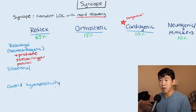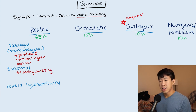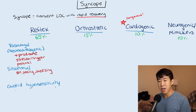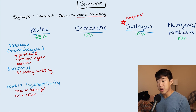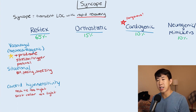Situational syncope is basically vasovagal — we see this when a patient is having a bowel movement, urinating, or sneezing; these trigger a vasovagal event. Carotid hypersensitivity is the classic test question with a businessman wearing a necktie that's too tight, pressing on the carotid baroreceptor, causing an increase in vagal tone and leading to syncope. Again, the key thing to note is the presence of a prodrome, which is a reassuring sign.